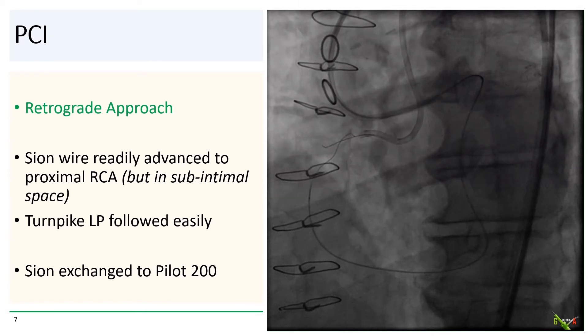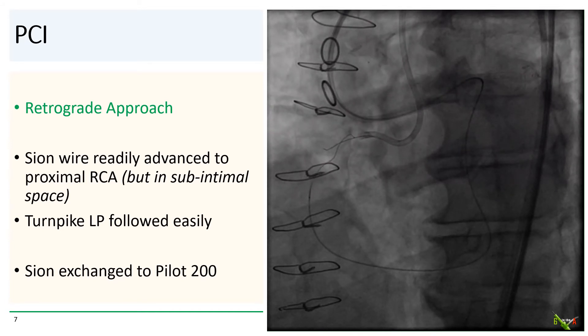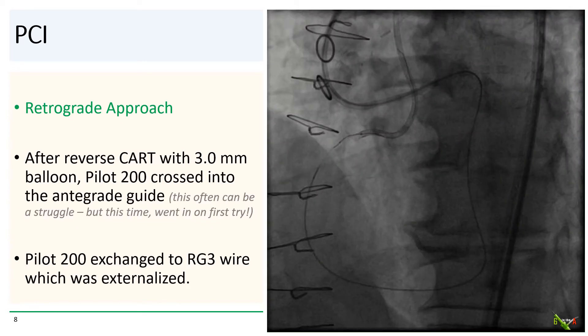After that, we were able to get the Turnpike LP fairly easily up into the mid-RCA and used it to switch out the Sion wire to a Pilot 200. We did a reverse CART in the proximal RCA with a 3.0 millimeter balloon, and after just a single inflation, we were able to get the retrograde Pilot 200 wire to cross into the antegrade guide. This often can be a struggle, but this time it went on the very first try. The Turnpike LP then followed into the antegrade guide where we trapped it with an antegrade balloon in the guide and exchanged the Pilot 200 to an RG3 wire for externalization.